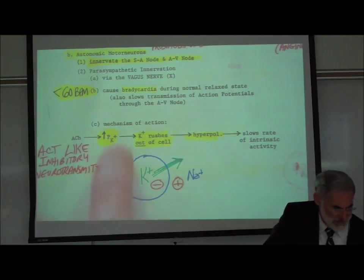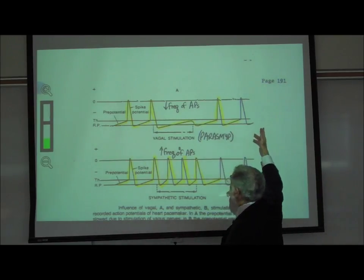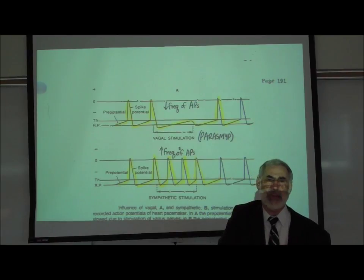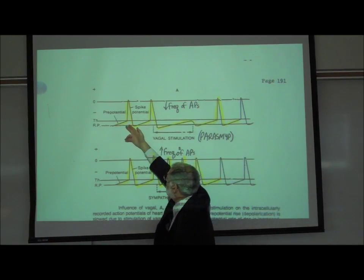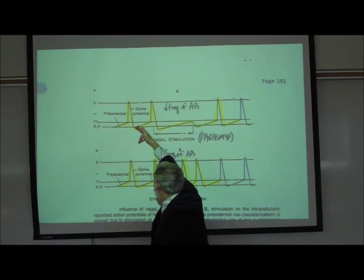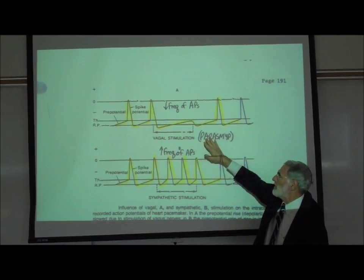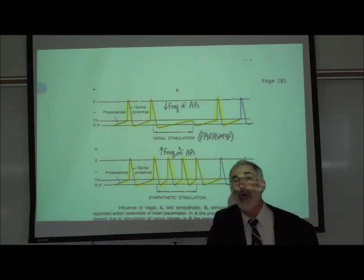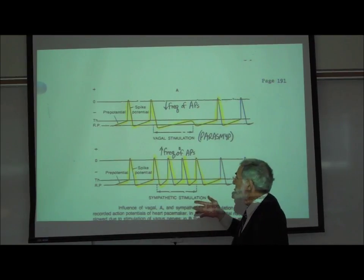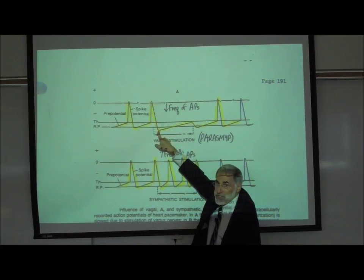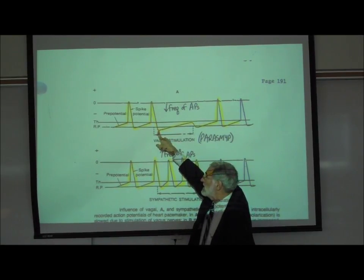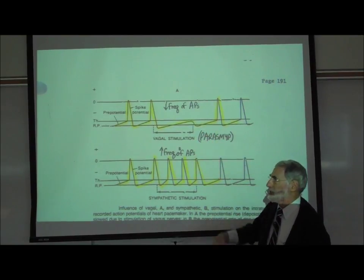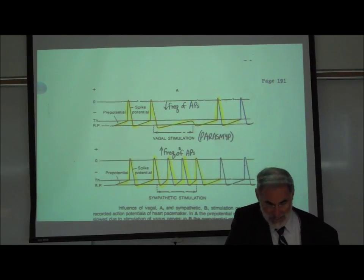We can see this on page 191. Here we see pacemaker activity of pacemaker cells in the SA node — they exhibit a spontaneous depolarization and fire off an action potential. Under vagal stimulation, when the parasympathetic autonomic motor neurons are activated or a parasympathomimetic drug is given, that causes hyperpolarization of the cells as potassium flows out of these pacemaker cells, slowing down the firing of action potentials and causing a slowing of the heart rate.